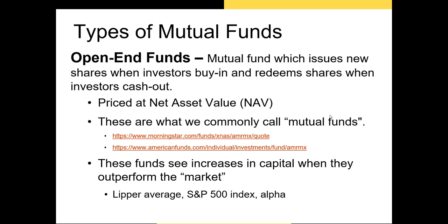Now let's talk about open-end mutual funds — what most people think of when they think of mutual funds. If you've ever thought of buying a Vanguard mutual fund, chances are it was an open-end mutual fund. The primary difference between open-end and closed-end funds is that open-end funds allow investors to buy and sell shares directly from the fund. When an investor buys shares, the fund takes that capital and increases its holdings of assets already in the portfolio. One benefit of open-end mutual funds is that they're priced at the NAV. Since investors buy and sell from the fund itself, there's no liquidity issue — as investors cash out, the fund sells assets and pays investors the NAV multiplied by shares sold, minus any fees.